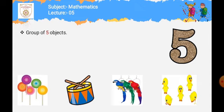تو کیا یہ group of five objects سے match کر رہا ہے؟ No۔ کیونکہ یہ three parrots ہیں اور ہمیں five parrots چاہیئے۔ اگر یہ five parrots ہوتے تو یہ group of five objects کا true answer ہوتا۔ تو یہ three parrots ہیں، اس لئے یہ wrong ہو گیا۔